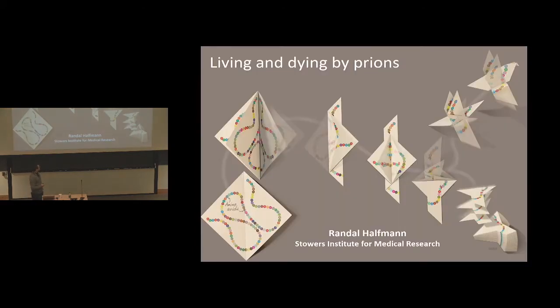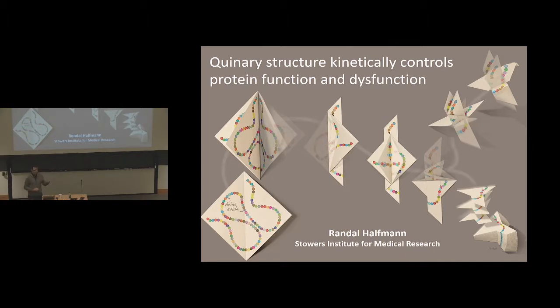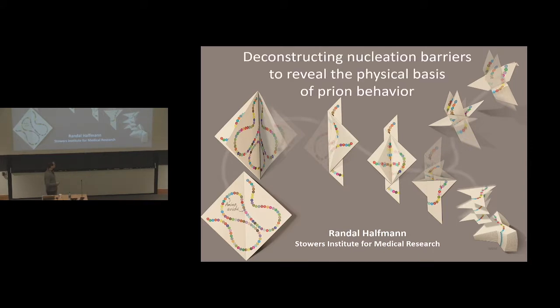So I was told that it would be a diverse crowd. I normally give lectures to biologists, so my sort of knee-jerk title that is sent to Carissa was this one, Living and Dying by Prions. I meant for that to convey the breadth of biological phenomena that we work on. But then I realized who I'm talking to, and I thought, maybe this is an opportunity to talk about things that are more mechanism-based. So then I gave this title instead, Quinary Structure Kinetically Controls Protein Function and Dysfunction. Now that I've gotten the reviews back, I learned that using the words quinary structure and kinetic control don't always make friends for me. And now I'm giving you what I think is the final title, which is Deconstructing Nucleation Barriers to Reveal the Physical Basis of Prion Behavior.